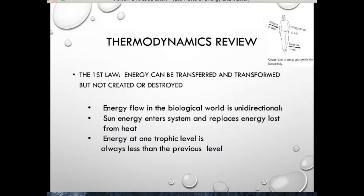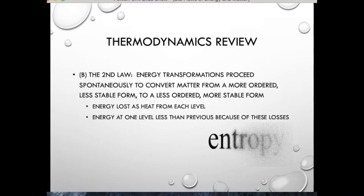As you remember in topic 1.3, the first law of thermodynamics states that energy can be transferred and transformed, but not created or destroyed. This means that energy flow in the biological world is unidirectional. Sun energy enters the system and replaces energy lost as heat. Energy at one trophic level is always less than the previous level due to entropy.